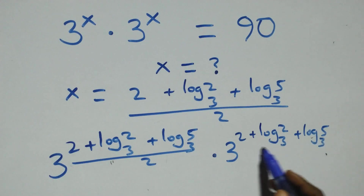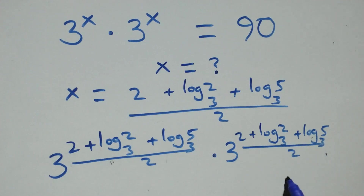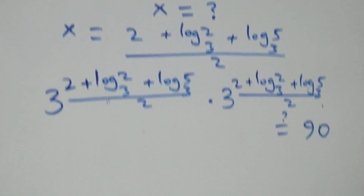We have 3 raised to power 2 times the quantity (2 plus log 2 base 3 plus log 5 base 3, all over 2), equals 90 on this side.